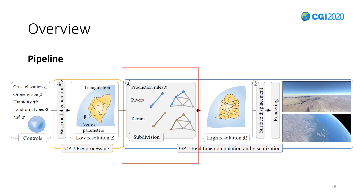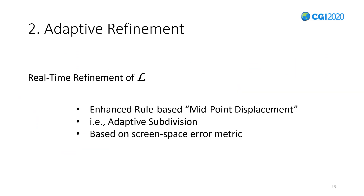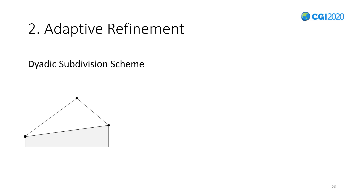Back to our pipeline — that was the preprocessing step. Now we begin the real-time computations to produce the detail model. This will be achieved through a massive subdivision, a parallel process applied to edges and faces of the mesh. We subdivide the mesh to meet a target level of detail based on screen space error. The subdivision relies on a scheme, which I will detail now.